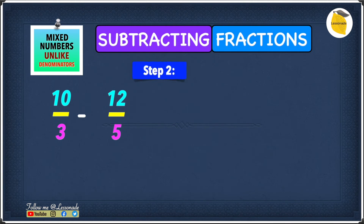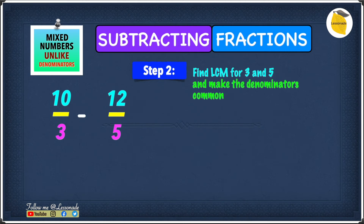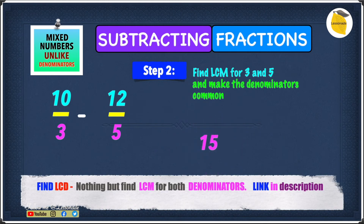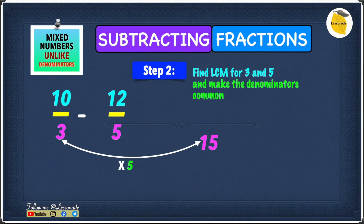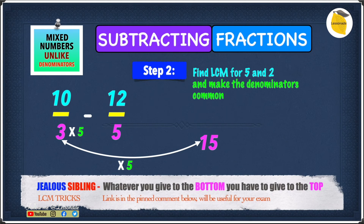Step 2 is to find the LCM for 3 and 5 and make the denominators common. The LCM for 3 and 5 is none other than 15. We need to find what number to multiply 3 by to give us 15 — that number is 5, because 3 times 5 gives you 15. So we multiply 3 by 5, and remember: whatever you do to the bottom number you have to do to the top number, so we also multiply the top number by 5.